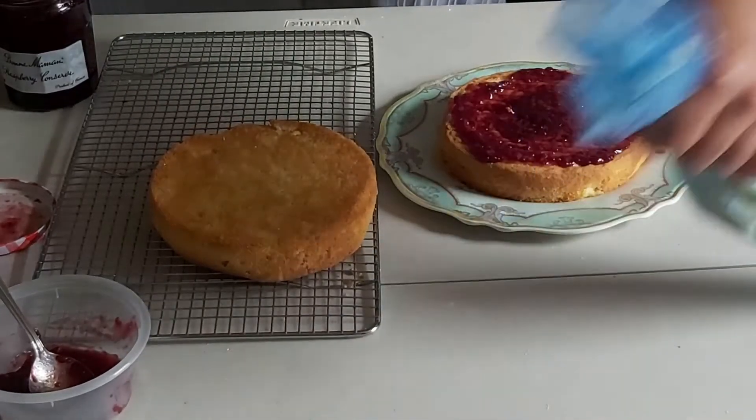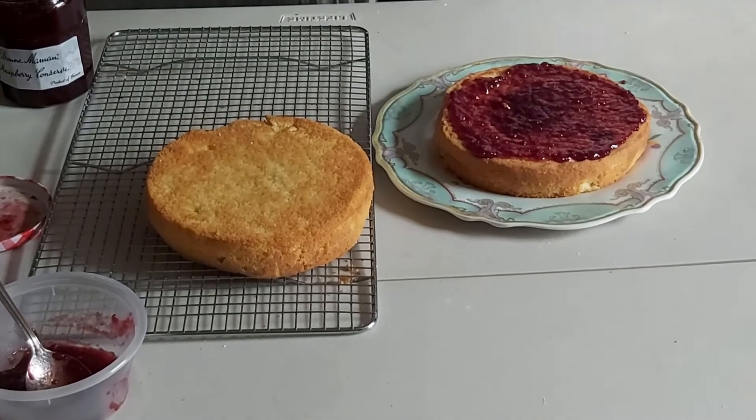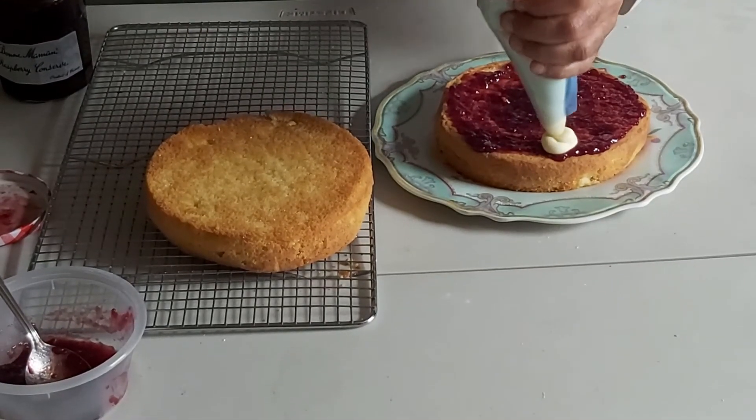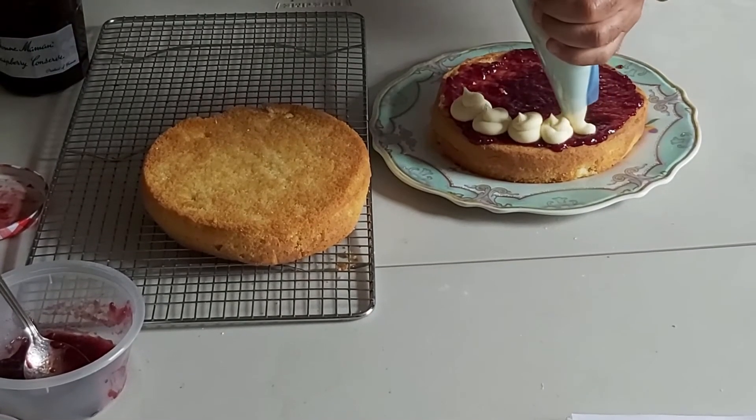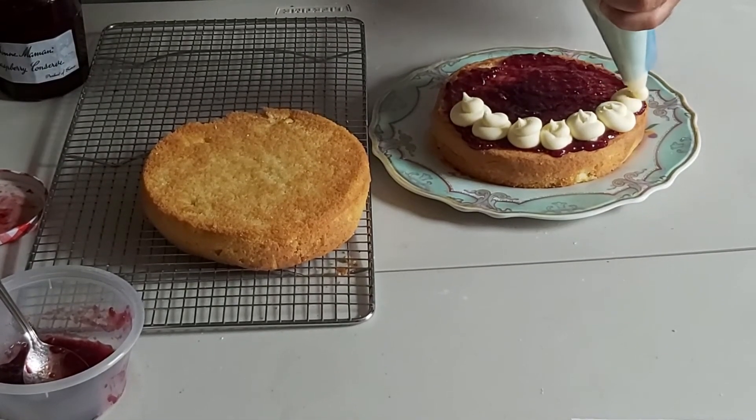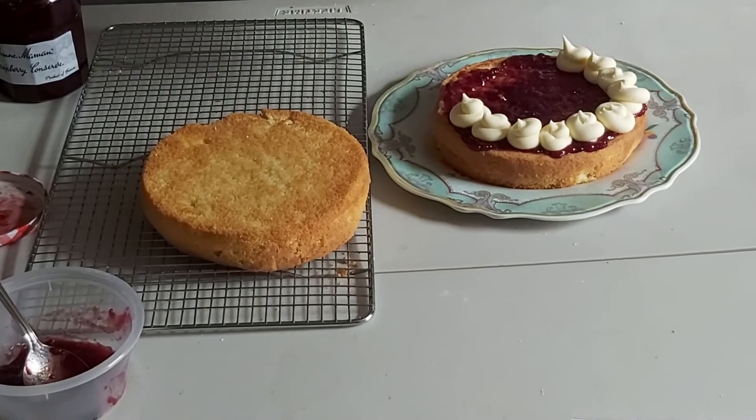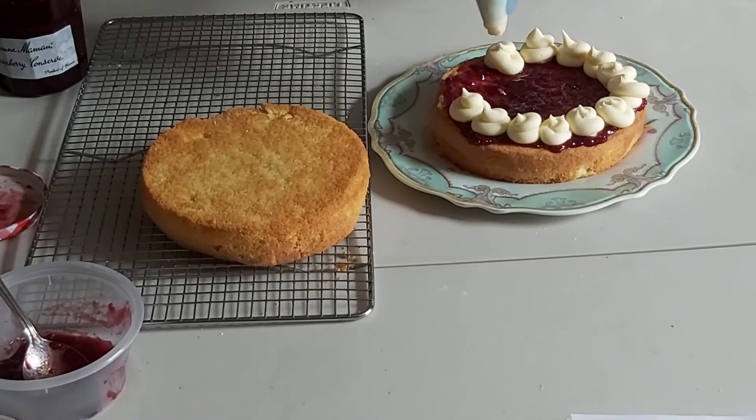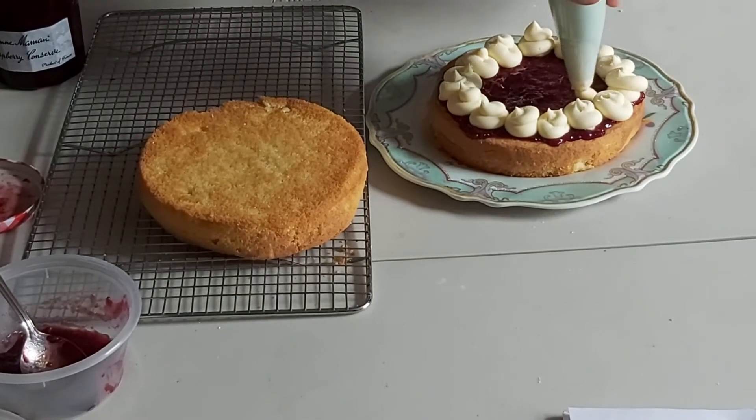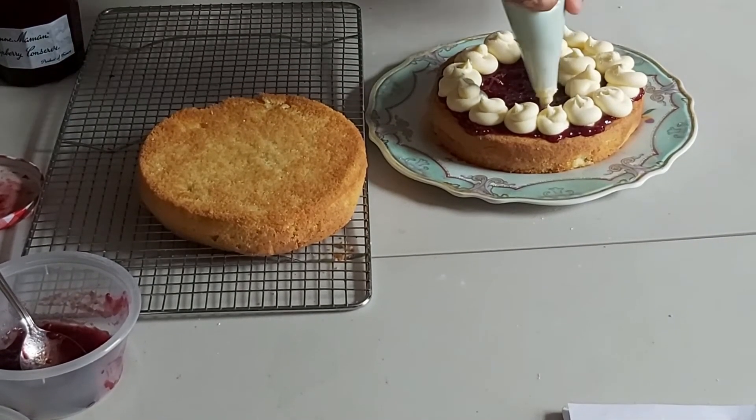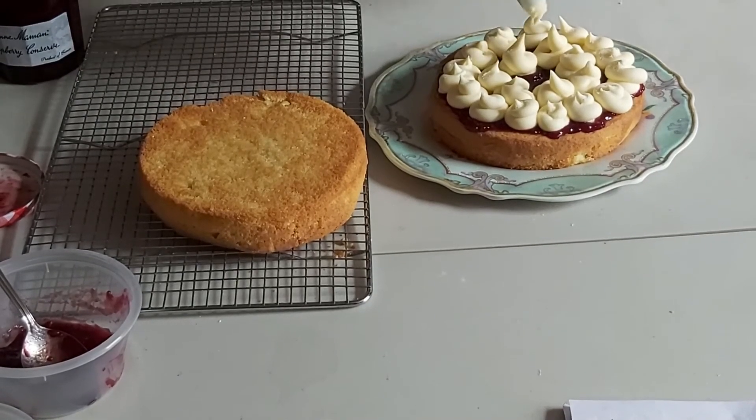And now for the icing. Now if you want to you can just spread this over the top, I think it looks nice if you just do kind of piped ones. So press down, just do the outside first and go in the middle afterwards. Just go in a circle motion and fill some in the middle.